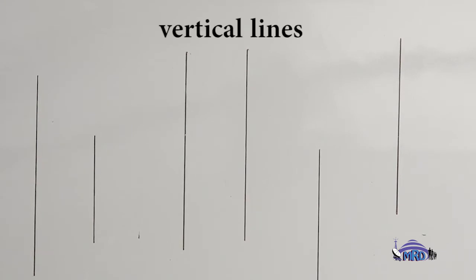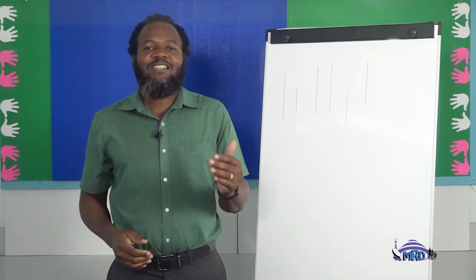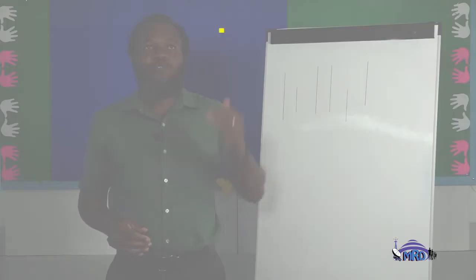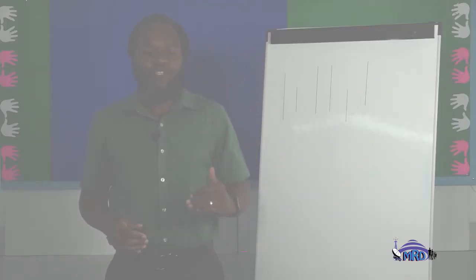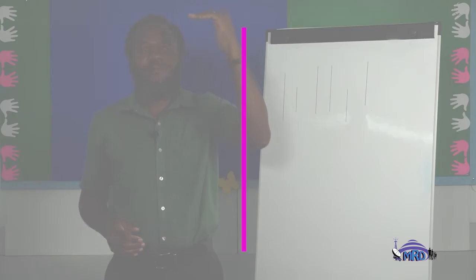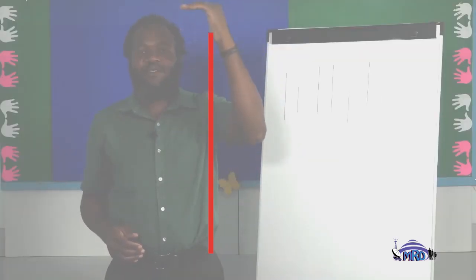More specifically, we are going to be learning about vertical lines. Do you know what vertical lines are? Vertical lines are straight lines which go from top to bottom or bottom to top, from north to south, or from south to north.